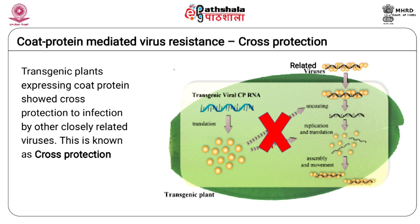Replicase and RdRp sequences from several RNA viruses have been described as sources inducing protection against viruses. Transgenic constructs used for induction of resistance include full-length, truncated, or mutated versions of the rep or RdRp gene of corresponding viruses. The rep protein produced by the transgene interferes with the function of the replicase produced by the virus, perhaps by binding to host factors or virus proteins that regulate replication and virus gene expression. Resistance is also expressed through reduction in movement protein.